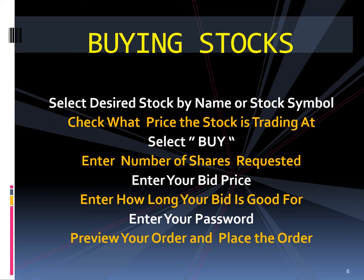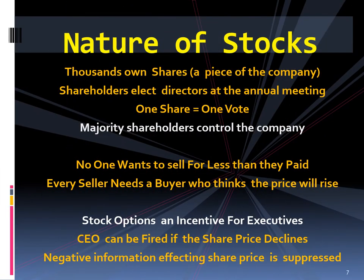Once the bid is accepted by a seller, it will take a day or two to appear in your record of stocks owned. Thousands of people own shares in the company — it is their small piece of the corporation. Each year at the annual meeting, the shareholders elect directors, and one share counts as one vote.